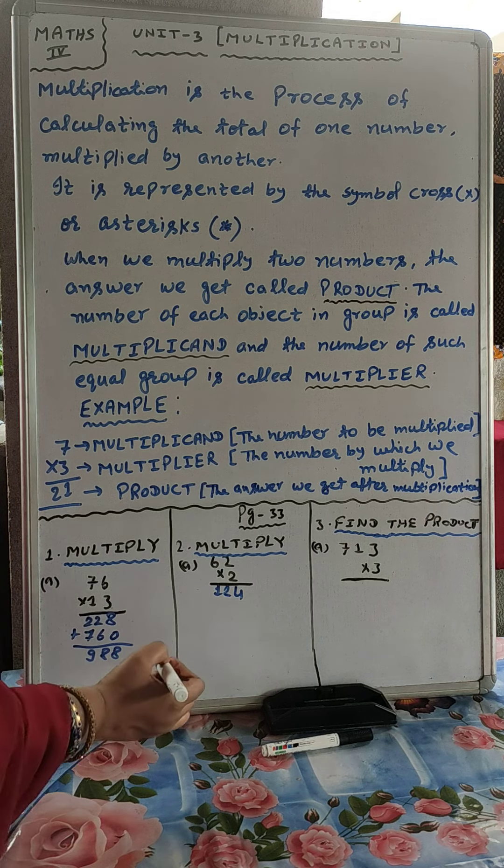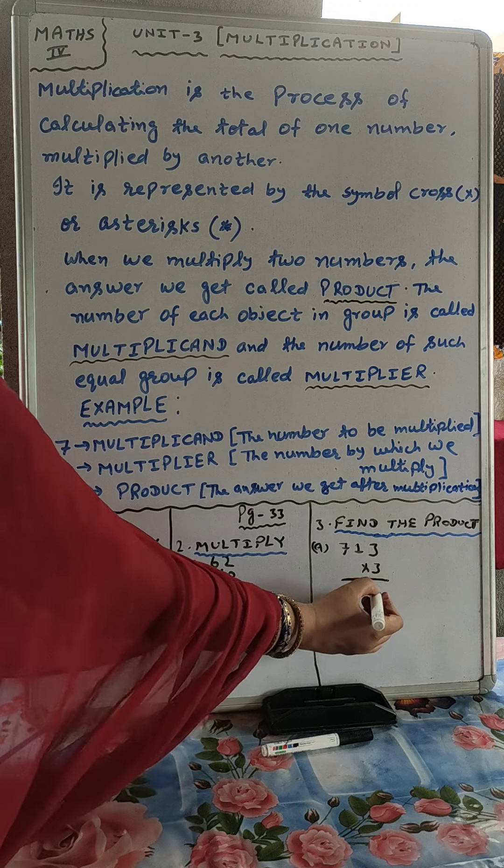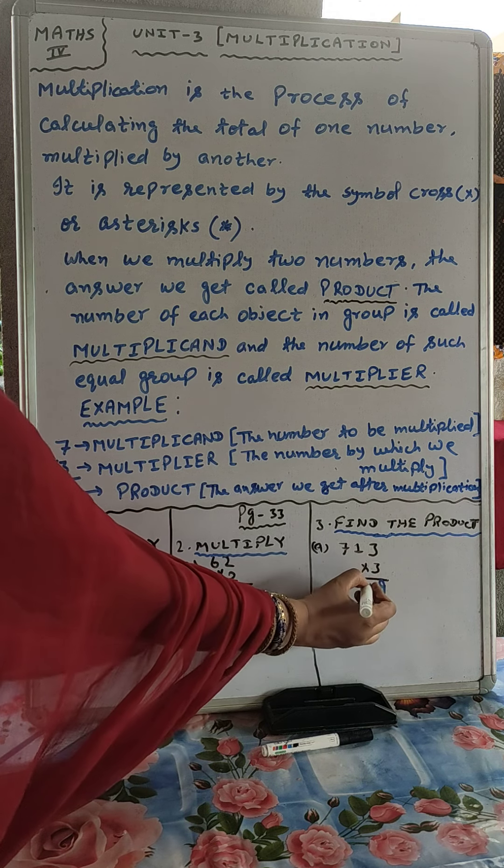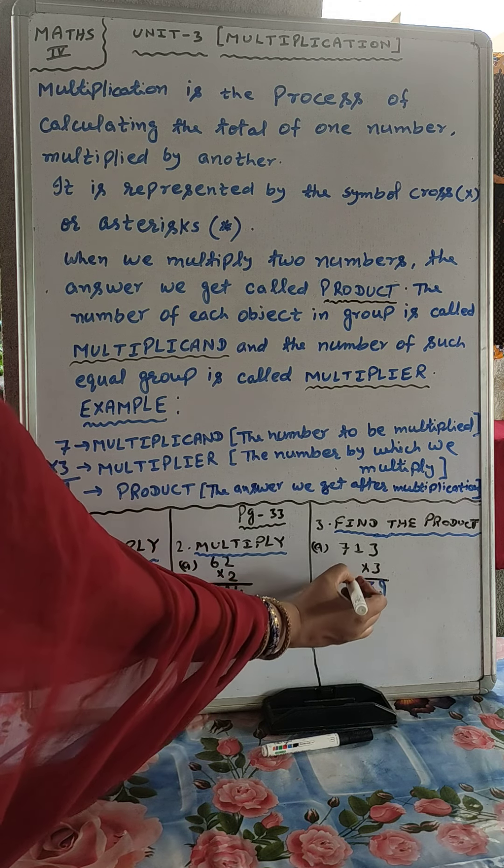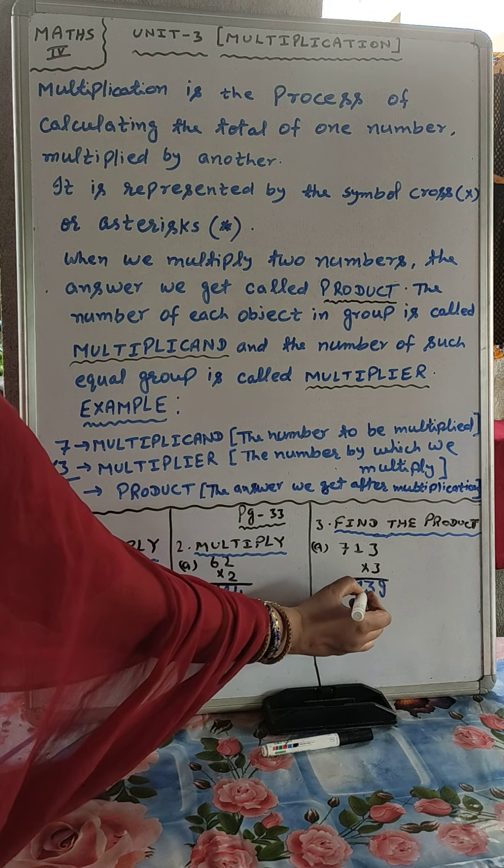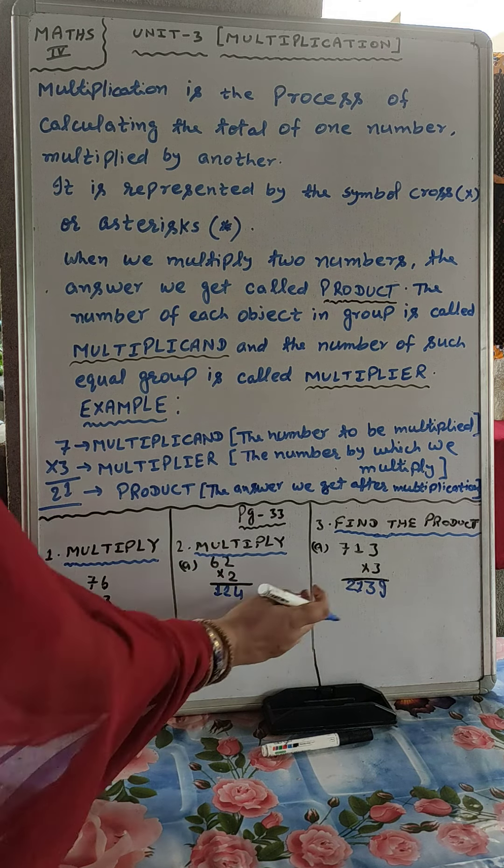Question number 3, find the product. 3×3 is 9. 3×1 is 3. And 3×7 is 21. That will be 2139.